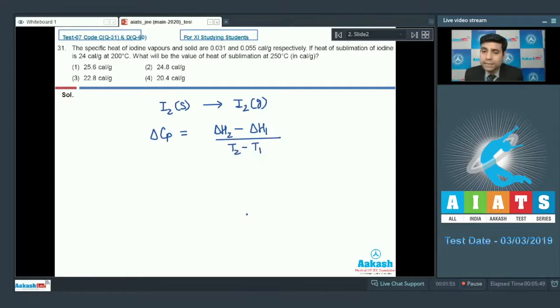In Kirchhoff's equation, enthalpy and energy changes are in calorie per gram. Therefore, we can directly use these values. So delta Cp is Cp of iodine vapors, it is 0.031, and Cp of iodine solid, product minus reactant.